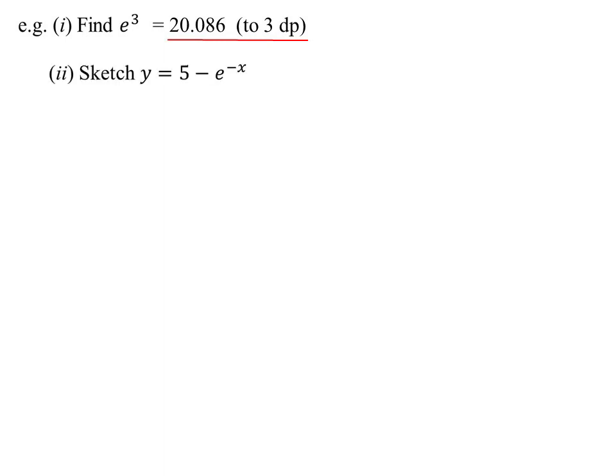Now, what about if I had to draw? So 5 minus e to the minus x starts with our basic curve, e to the power of x. Now, e is a number that's bigger than 1, so we have one of these exponentials. So that's the basic one. What have we done to it?